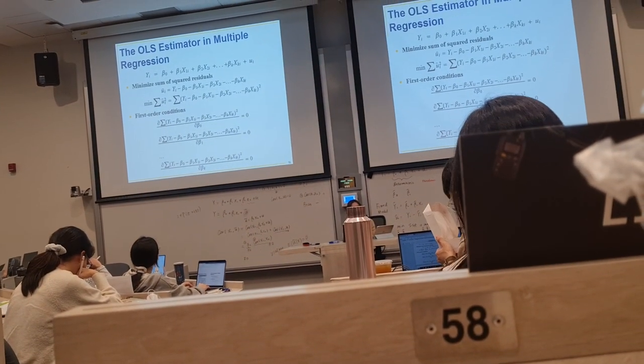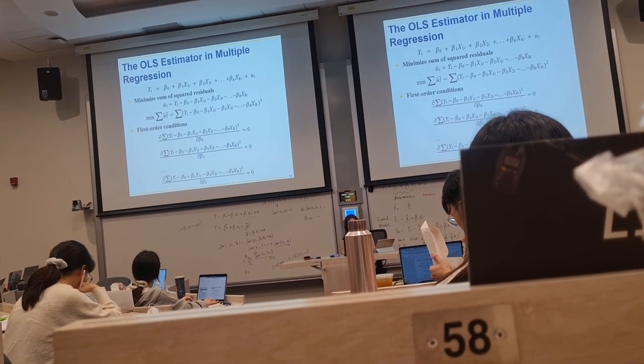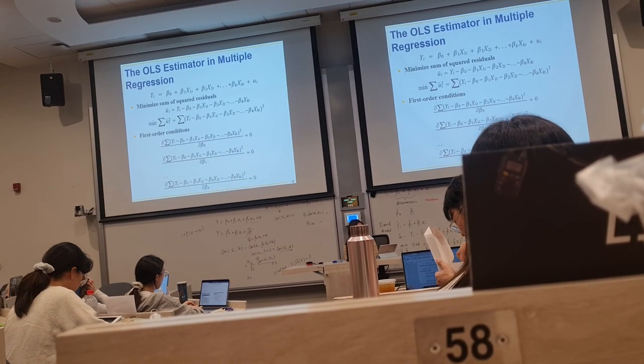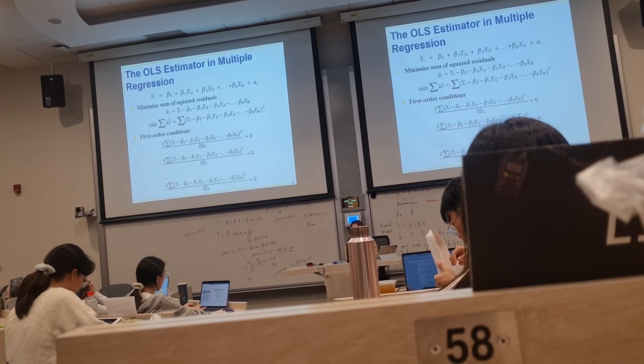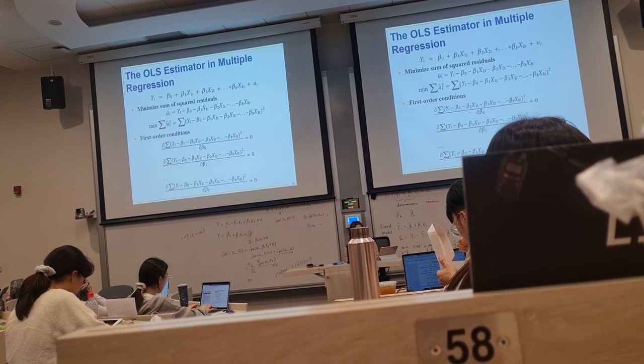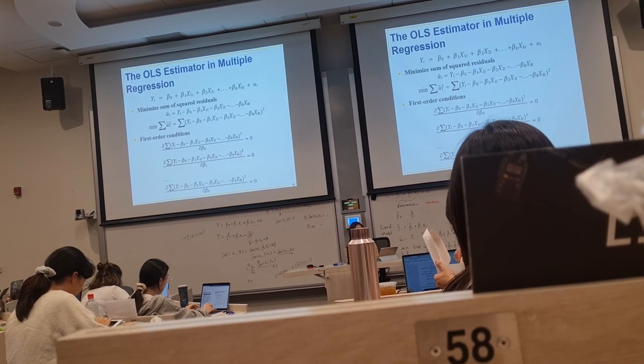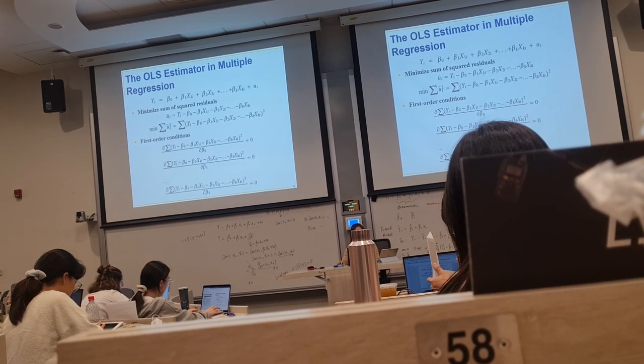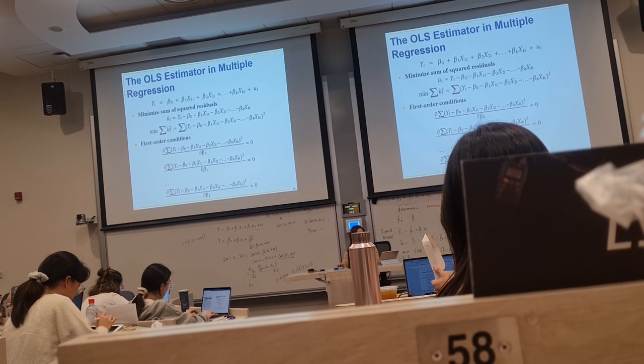No matter how many regressors we have, we can still apply the OLS in the same way. If there are k slope coefficients plus 1 intercept coefficient, in total k plus 1, we will have k plus 1 first order conditions at the same time.